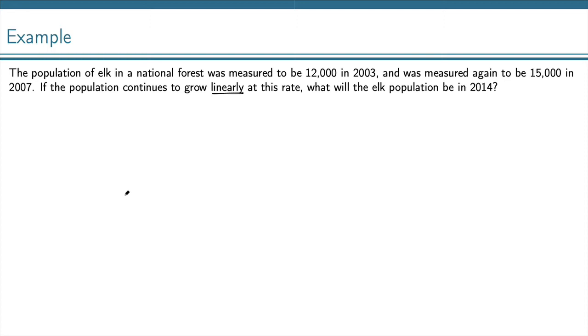So, we've got a couple things going on here. I'm going to go ahead and use our explicit form, which is P sub n equals P0, the initial amount, plus D times the number of time periods n.